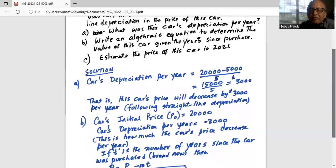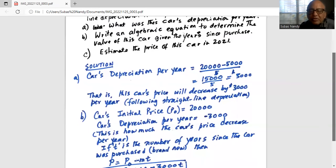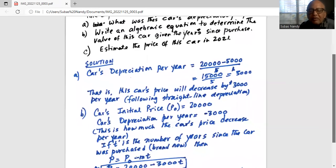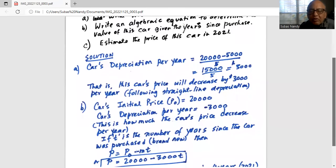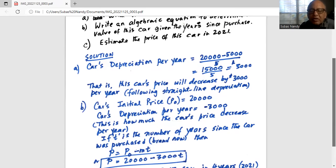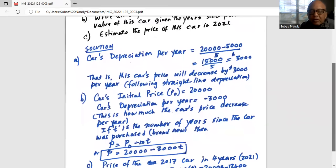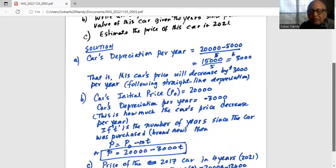So if t is the number of years since the car was purchased brand new, then P, capital P, price in year t is equal to P0, which is $20,000, minus m times t. m is the depreciation per year. So P equals $20,000 minus $3,000 times t in years.